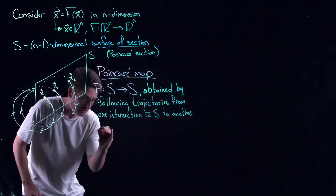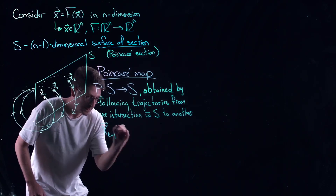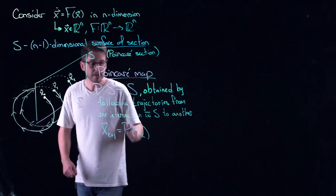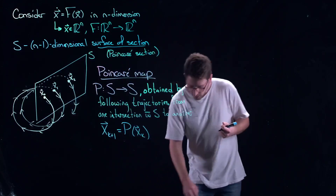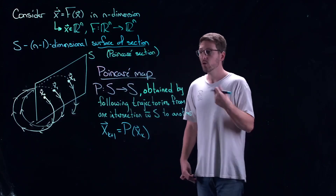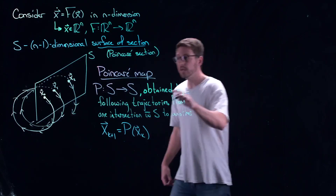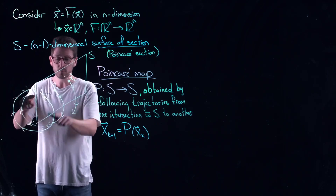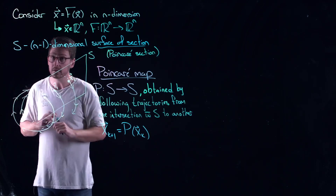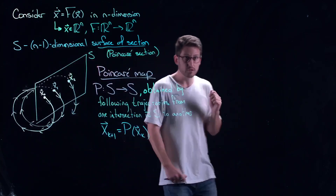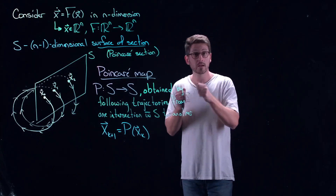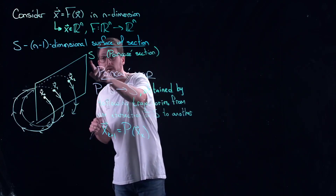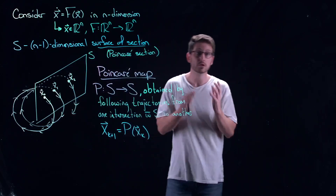Essentially what this gives you is a way of — at least theoretically — generating a sequence of successive intersections with the Poincaré section. The Poincaré section is lower-dimensional than the original phase space and has less information. What the Poincaré map offers is a way of tracking complex trajectories but in this lower-dimensional space, with a reduced amount of information.